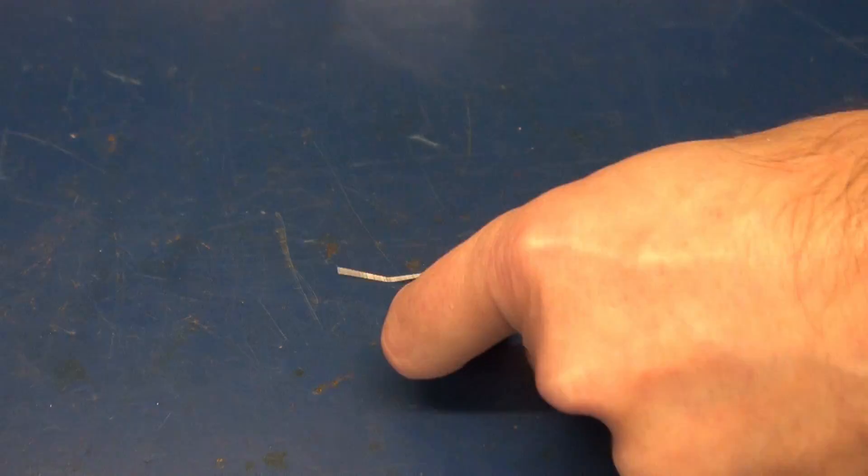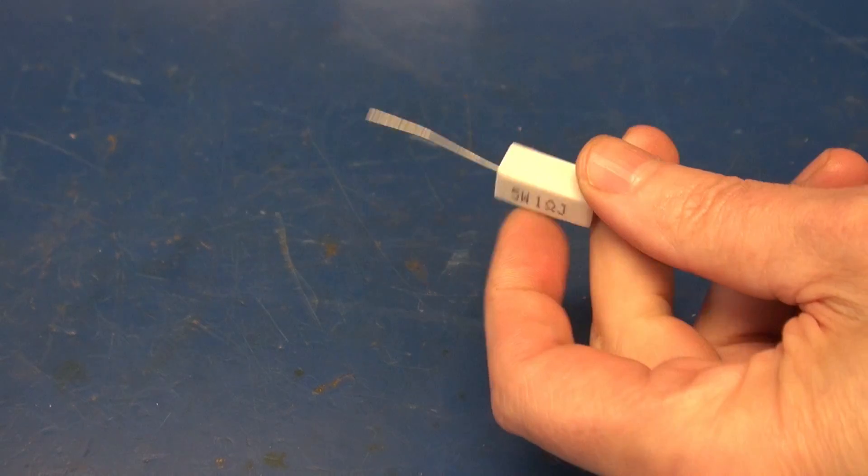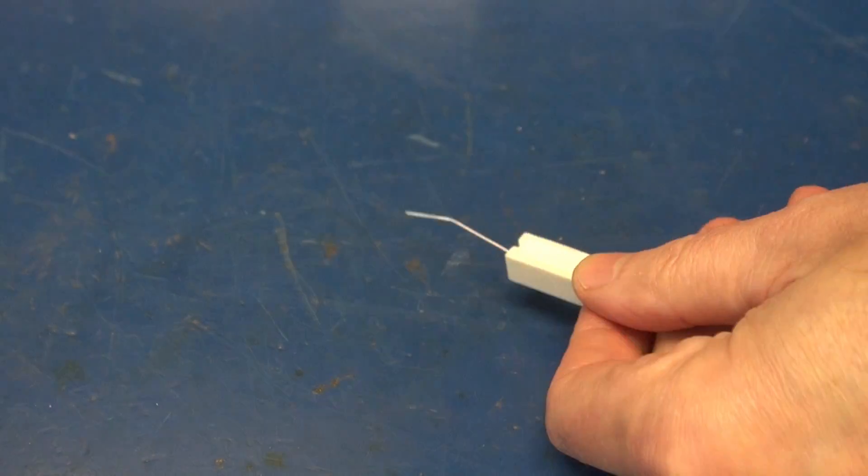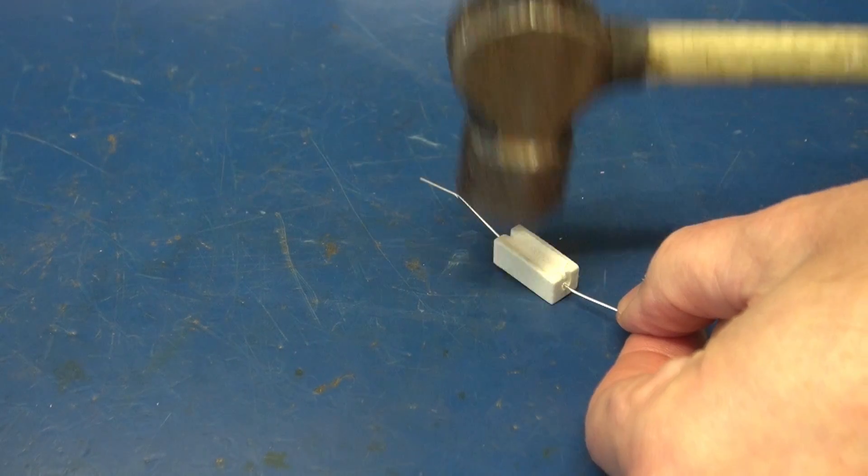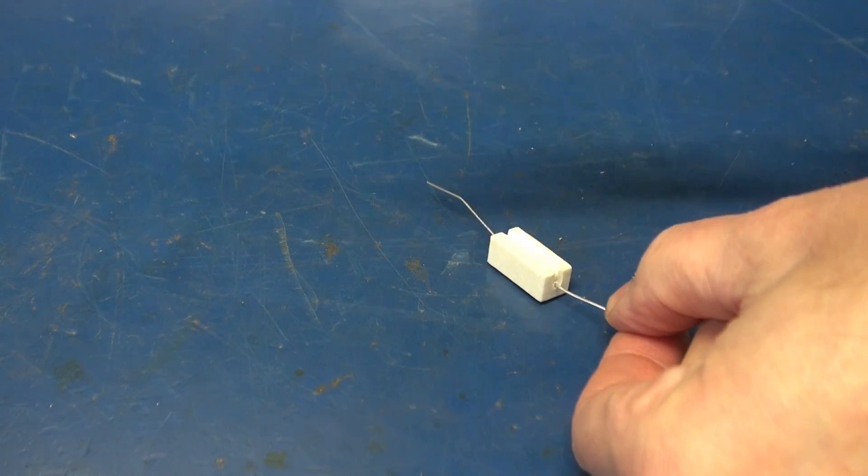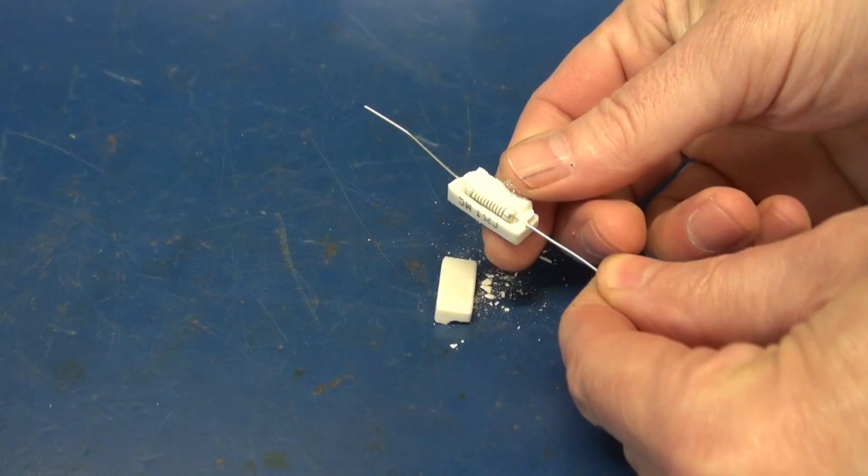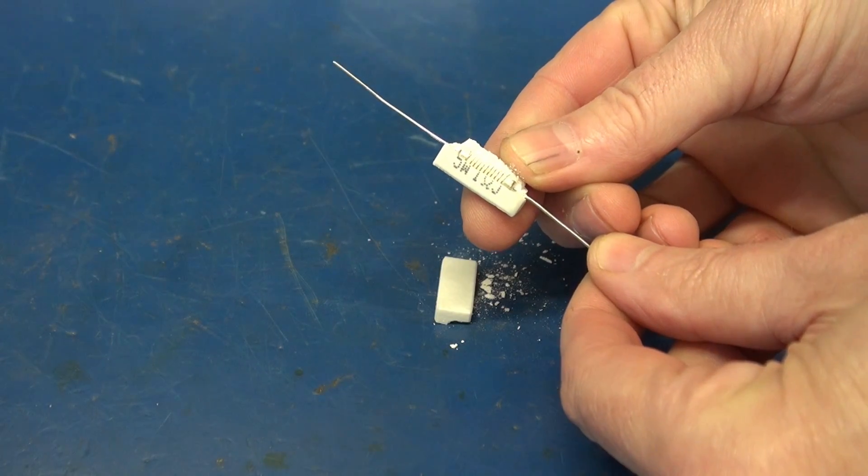So here is the destructive part of the process. You have to open this case up, and the best way to do it is to take a hammer and break that ceramic. And you're gonna expose the inner wire wound resistor.